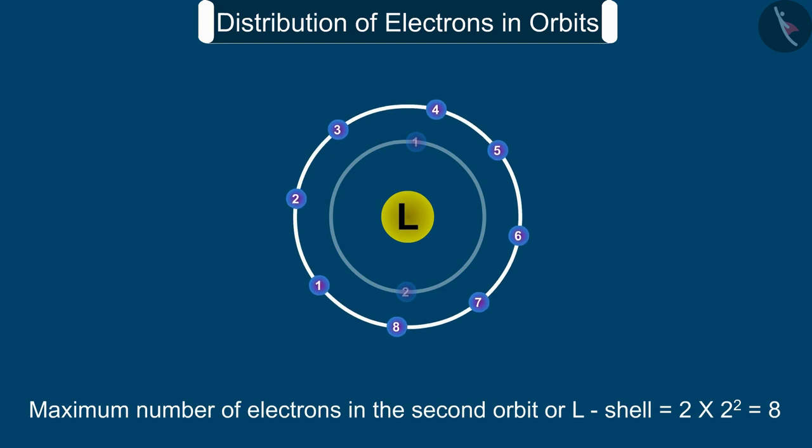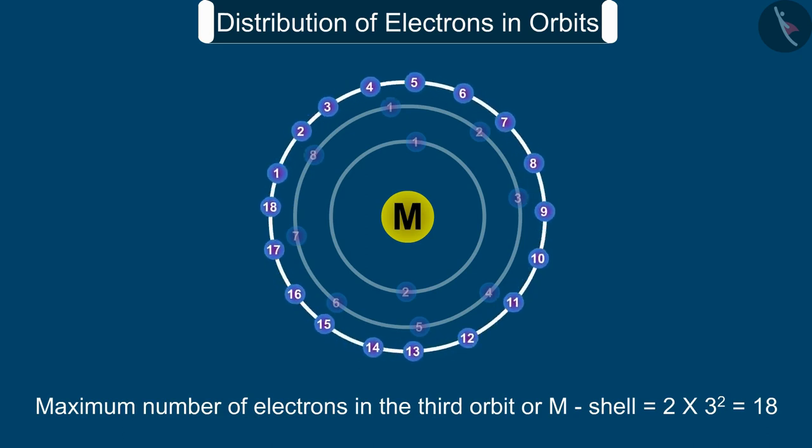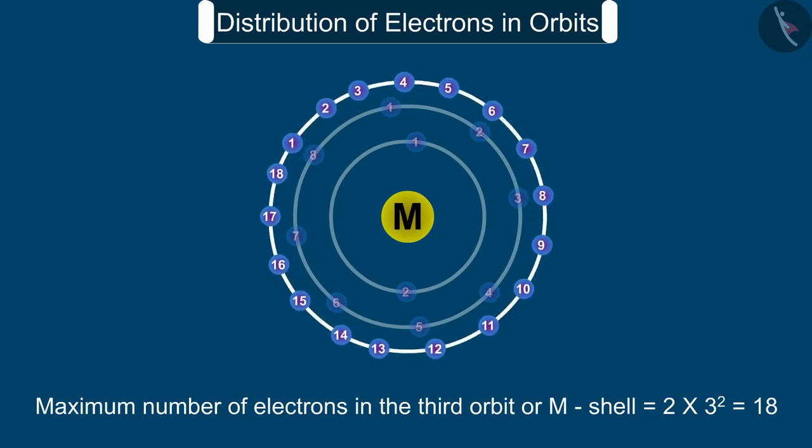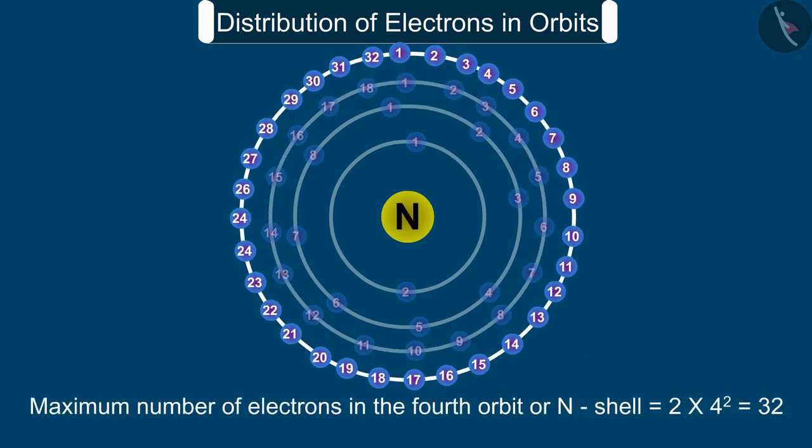The third orbit or M shell is equal to 2 into 3 square, that is 18. The fourth orbit or N shell is equal to 2 into 4 square, that is 32.